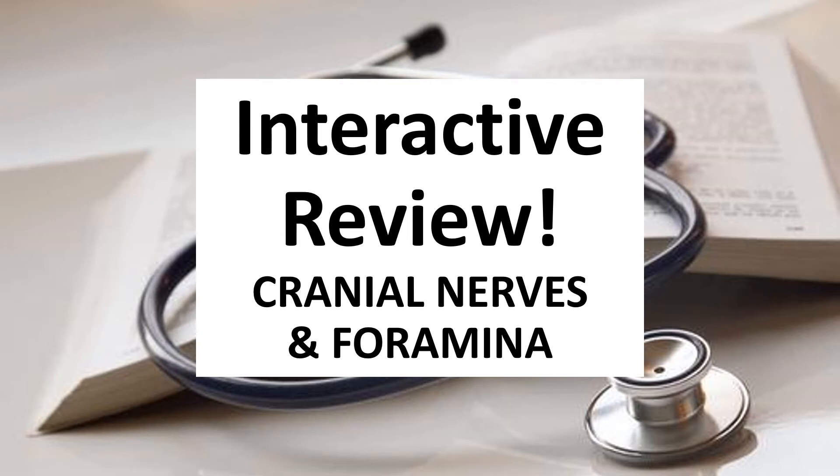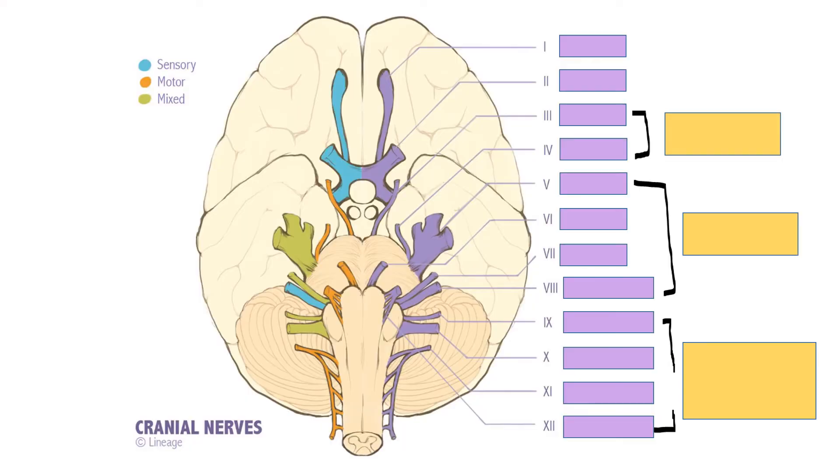Let's review cranial nerves and foramina in the skull. Notice the color code for the types of cranial nerves. Blue for sensory, orange for motor, and green for mixed.